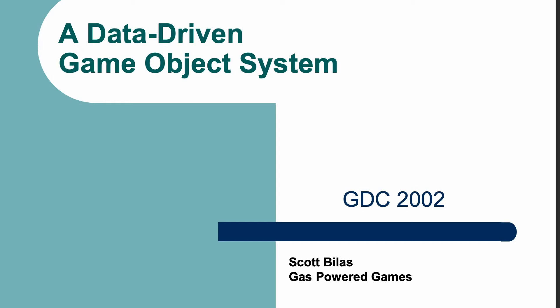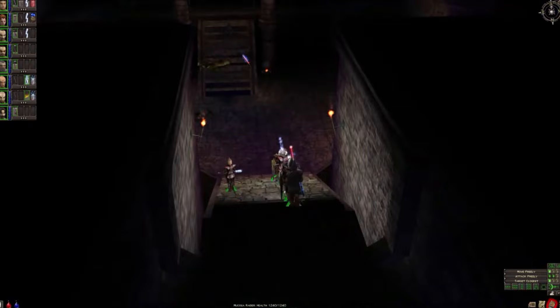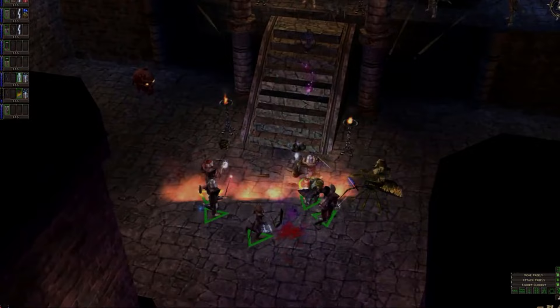I say modern because there is a precursor to entity component system that is sometimes also called entity component system, but it only has entities and components. To reduce confusion, I'm going to refer to the original concept as the component pattern. The component pattern was introduced by Scott Bilas at GDC in 2002, where he talked about Dungeon Siege and how it had a data-driven game object component system that allowed designers to make significant changes to the game quickly and on their own.